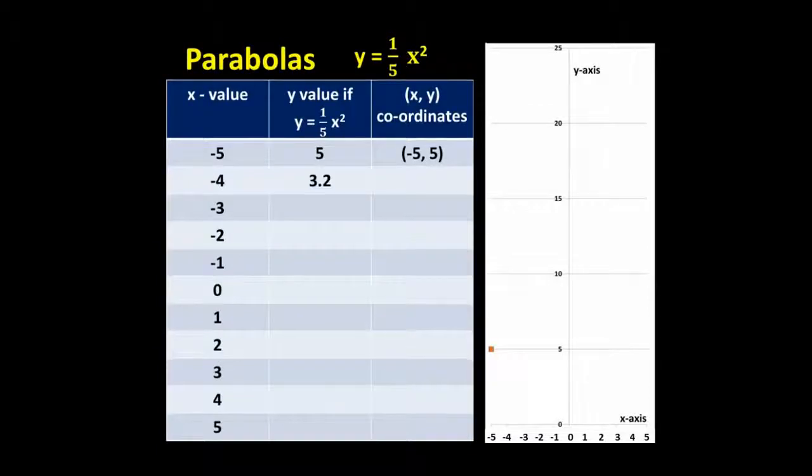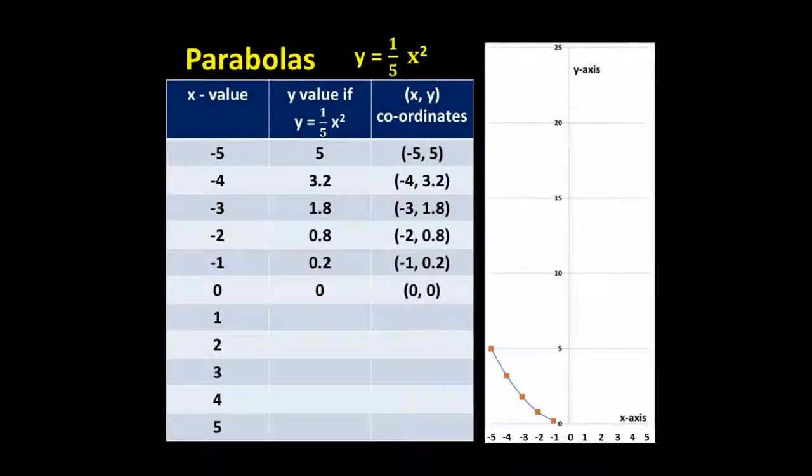One fifth of negative 4 squared is 3.2. So the next point goes at (-4,3.2). One fifth of negative 3 squared is 1.8. So the next point goes at (-3,1.8). If we continue plotting all these points, we end up with a flatter curve than the one we saw before. But this curve is also a parabola.